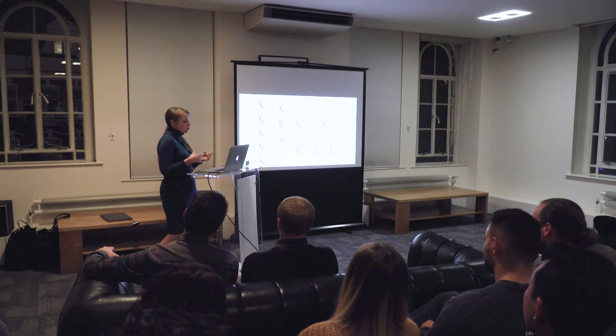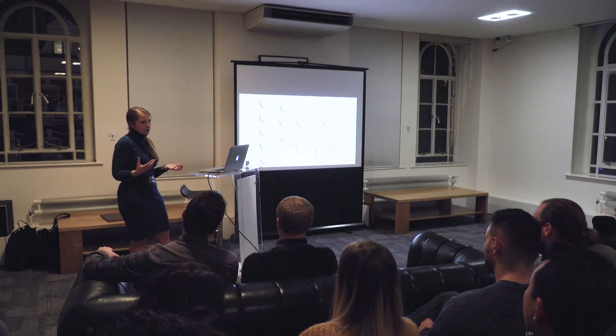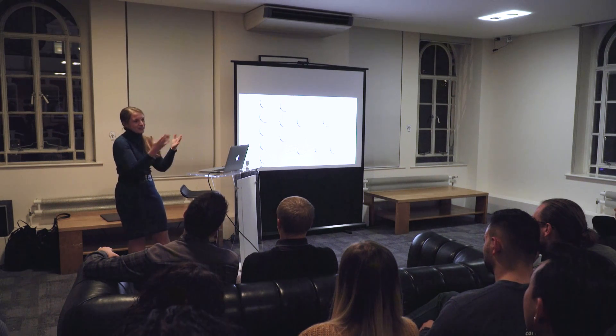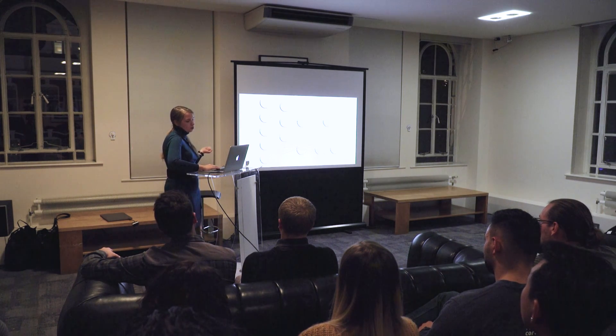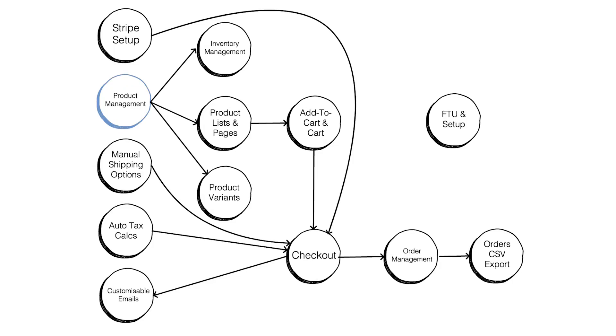For example, we can't start working on inventory management if product management hasn't been built, because we need a product item to exist. Similarly for checkout — no person can complete checkout for a physical product if there are no shipping rules. To enable the order feature, we need to: create product management, work on the product list from a developer perspective, work on the add-to-cart component and cart component, then work on checkout — and only then start work on order management.